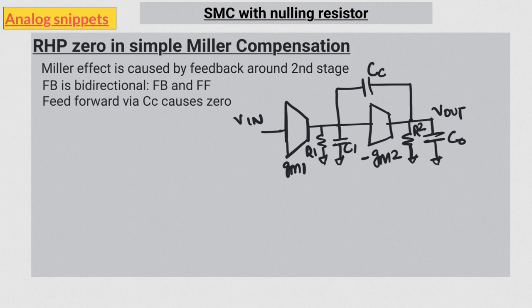At a certain complex frequency, these two paths cancel out and create a zero. Now, since the second stage is an inverting stage, the polarity of these two paths is opposite, and that is the reason it is a right-hand plane zero.